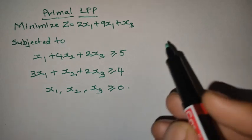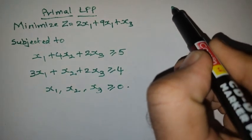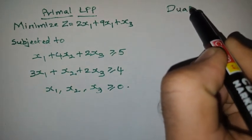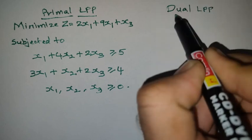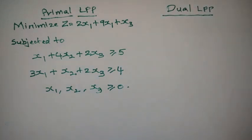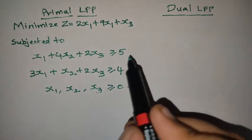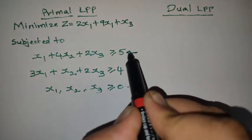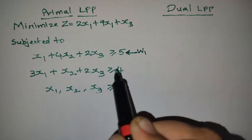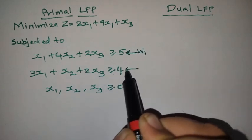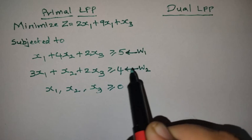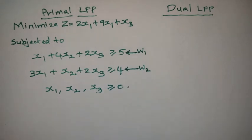So now I am writing the dual LPP. For converting into dual LPP, I first consider the decision variables. For the first constraint, I am taking W1 as the decision variable, and for the second constraint, W2 is the decision variable in the dual LPP.